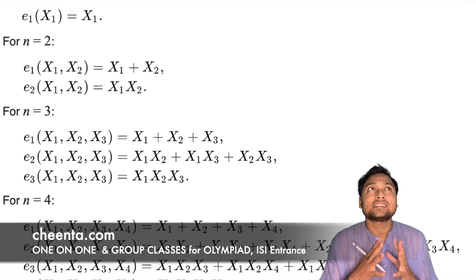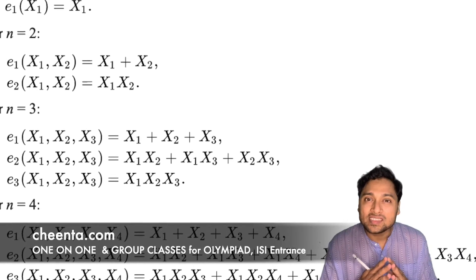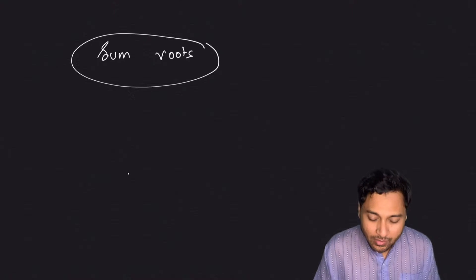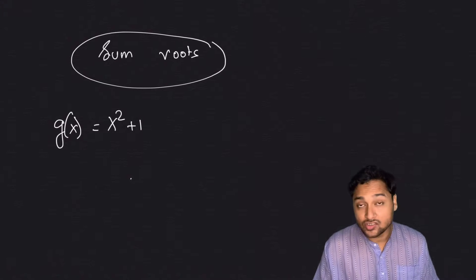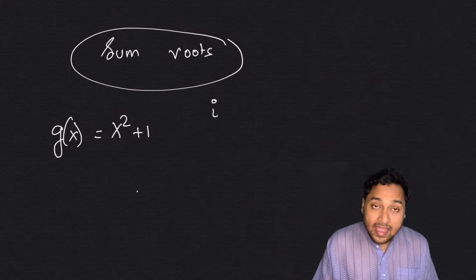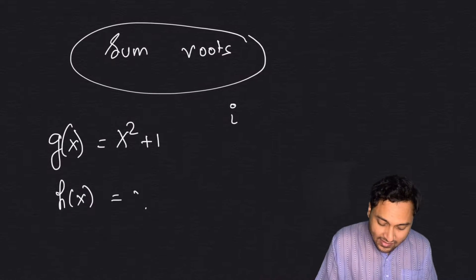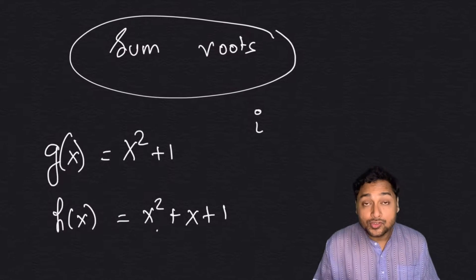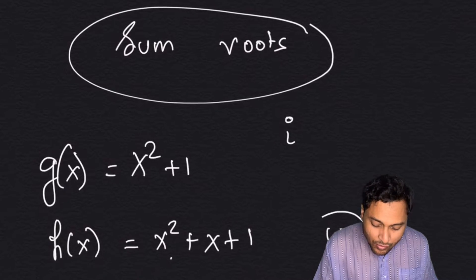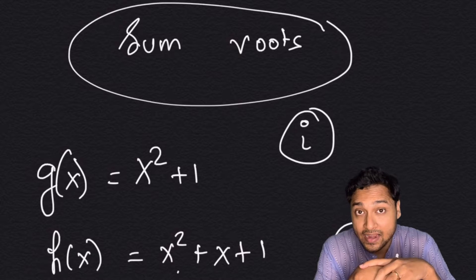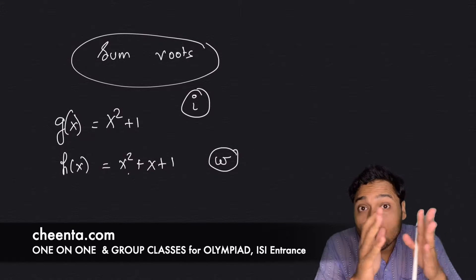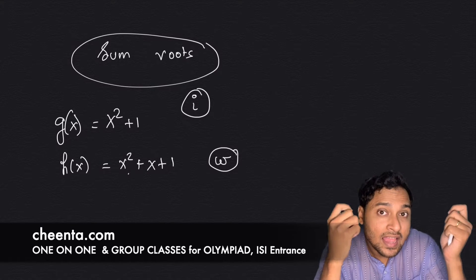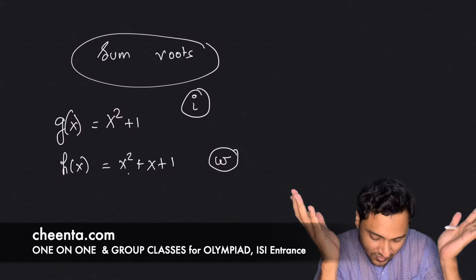There is this ancient problem of symmetric polynomials — if you've seen it, you know what I'm talking about; otherwise this problem is a good example of how to use it. The problem says x² + 1, let's call that g(x), has a root i. And another function x² + x + 1 has a root omega. If you know complex numbers, you know the exact values of i and omega, but the strategy we'll discuss works for any polynomial with integer coefficients whose roots are real or complex.